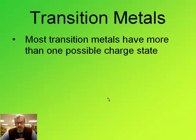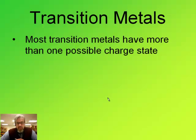Transition metals are really common in ionic compounds — things like iron and titanium, those metals that come in the middle of the periodic table, sort of the valley of the periodic table. They often have more than one possible charge state, so it's important to know how to deal with that.